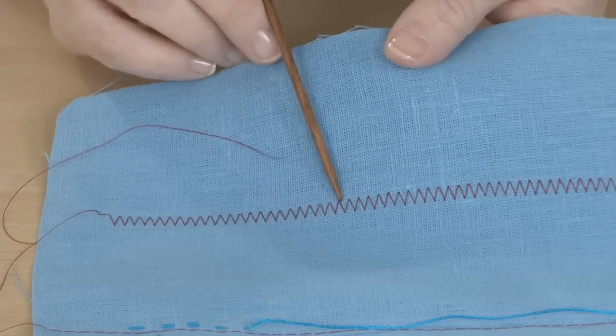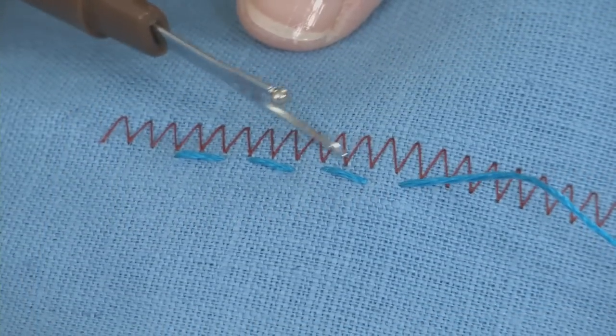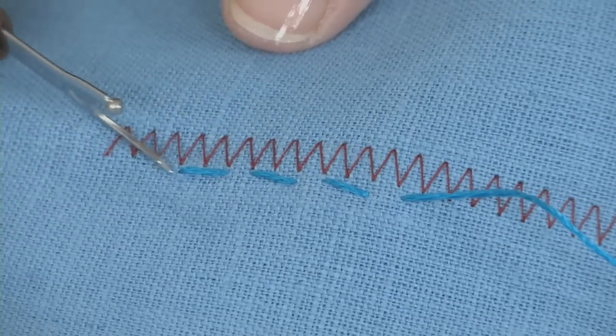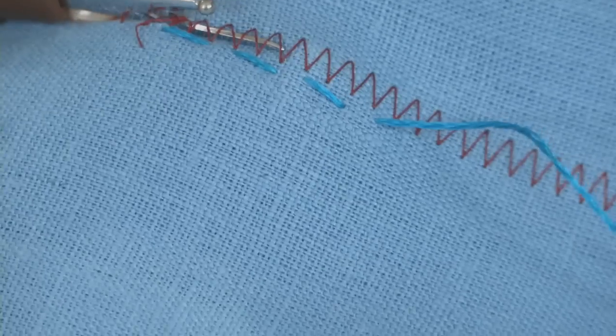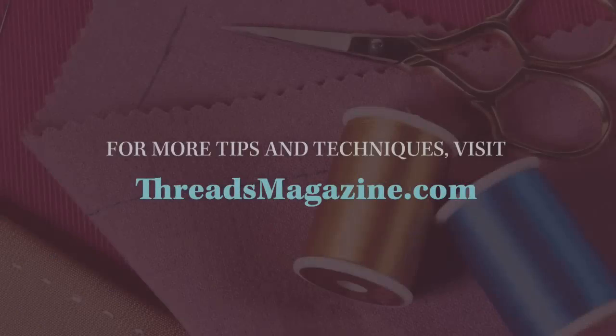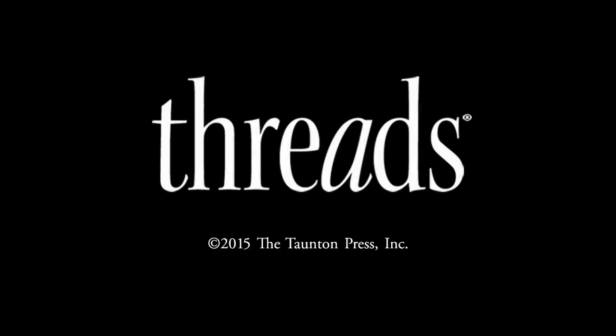You can also set the machine for a zigzag stitch, which is even easier to follow. When you have finished sewing the hand stitches, remove the machine basting to leave your perfect hand topstitching. Thank you very much.